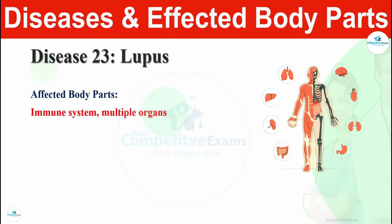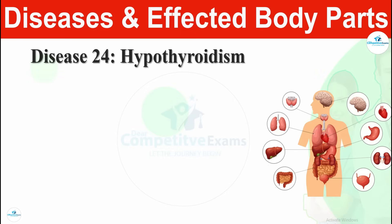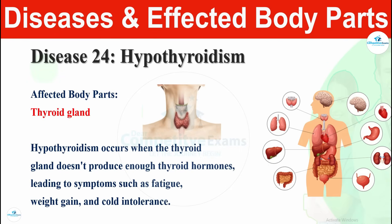Disease number twenty-three is lupus. Lupus affects the immune system and multiple organs. It is a chronic autoimmune disease that can affect various organs and systems including the skin, joints, kidneys, and more. Disease number twenty-four is hypothyroidism, which affects the thyroid gland. Hypothyroidism occurs when the thyroid gland doesn't produce enough thyroid hormones.